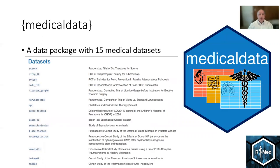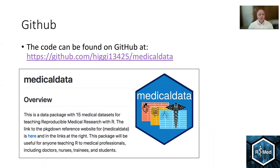So currently, Medical Data has 15 medical data sets, ranging from the very old trial of six therapies for scurvy to a 2020 COVID testing data set. The code can be found on GitHub at this link, which I'll drop in the chat, and this is an overview from the PackageDown website for the package.